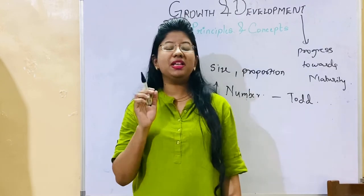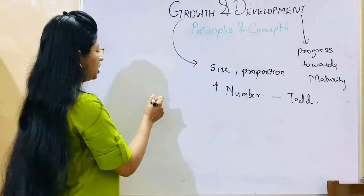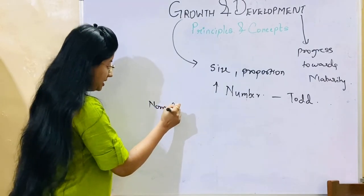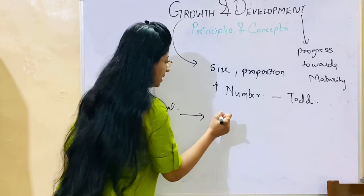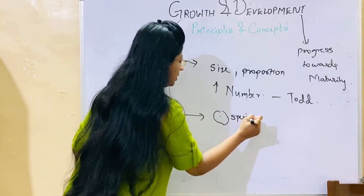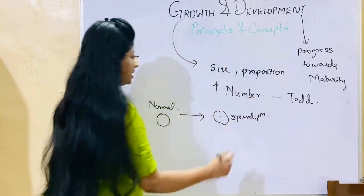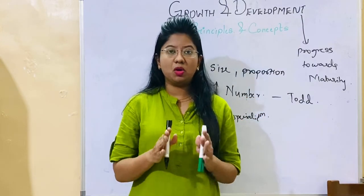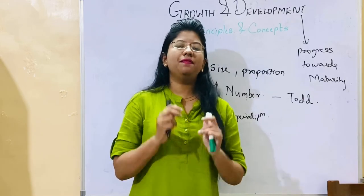There is one more term — differentiation. What do you mean by differentiation? Differentiation means a normal cell changes and becomes a specialized cell — it changes its form. This is called differentiation. So we have learned about what is growth, what is development, and what is differentiation.